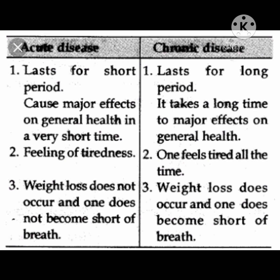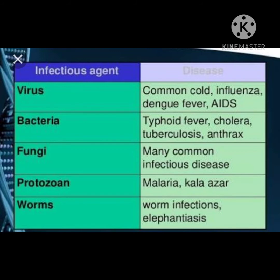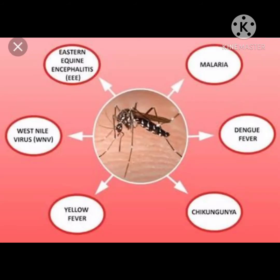Diseases are also classified into categories based on their cause or means of spread. If the disease is caused by a microbe or microorganism, it is a communicable or infectious disease. If it is not caused by a microorganism, it is a non-communicable disease. Infectious diseases usually spread from an infected person to others through air, water, food, physical contact, sexual contact, and also through insects and carriers.